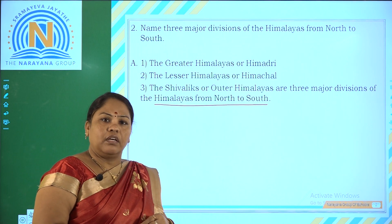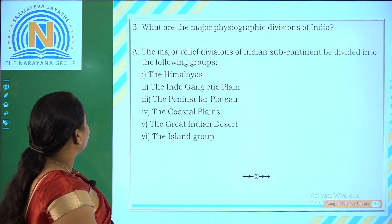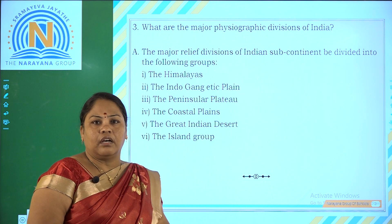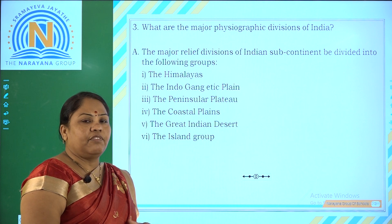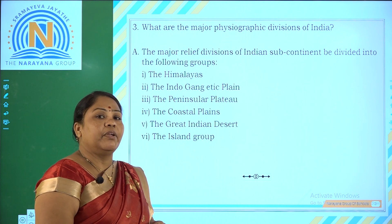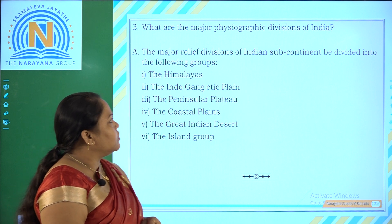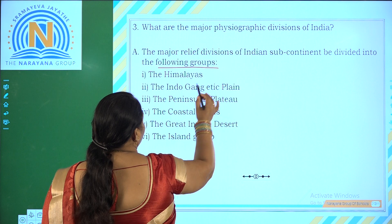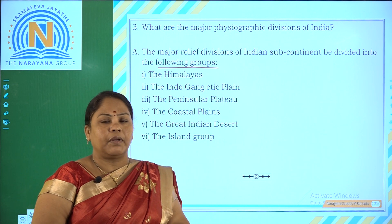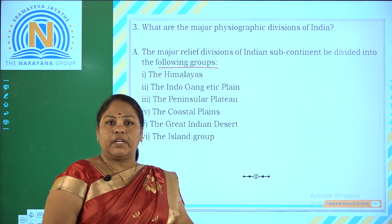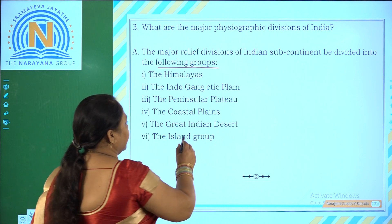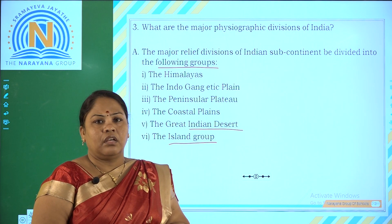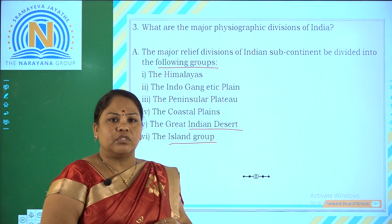Our third question is: what are the major physiographic divisions of India? The subcontinent may be divided into the following groups: the Himalayas, the Indo-Gangetic Plains, the Peninsular Plateau, the Coastal Plains, the Great Indian Desert, and the Islands. These are the six major relief divisions of our country.